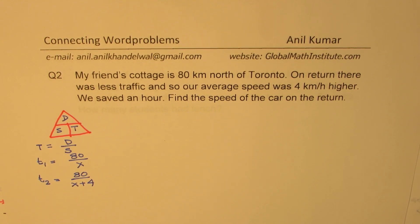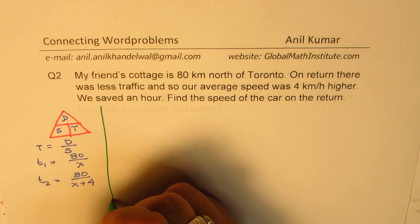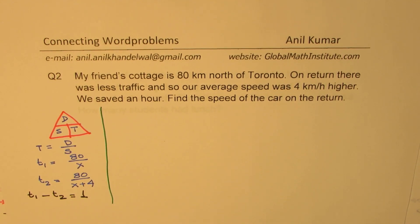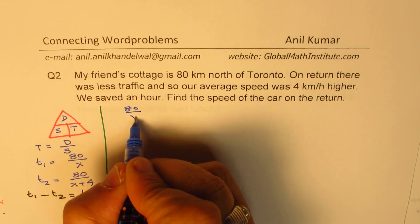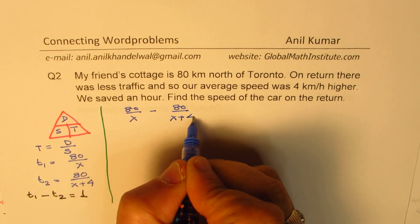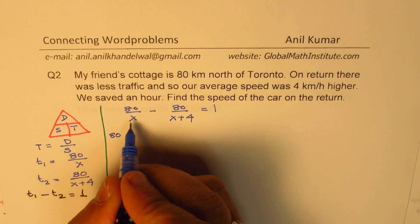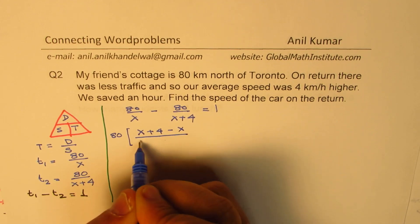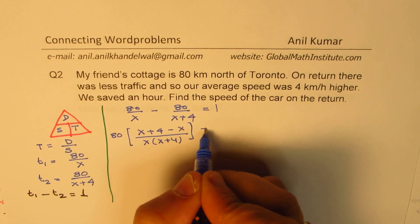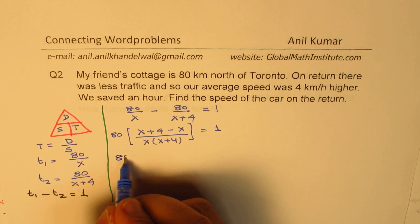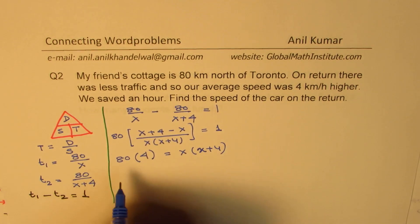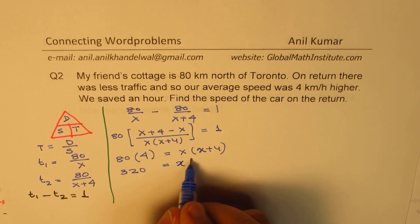So we write: 80/X minus 80/(X+4) equals 1. Taking 80 as common and simplifying, we get 80·4 over X(X+4) equals 1. Cross-multiplying: 320 equals X(X+4). We can think of two numbers whose product is 320 and difference is 4 — those are 16 and 20.